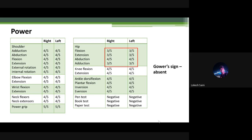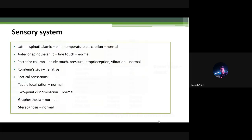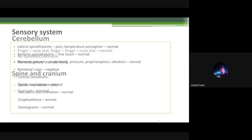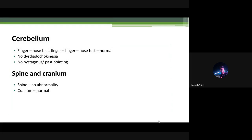Regarding Gower's sign, parents did not give a history of it being present, and currently the child could not get up once made to sit. Sensory system examination was essentially normal. Cerebellar, spine, and cranial nerve examination was normal too.